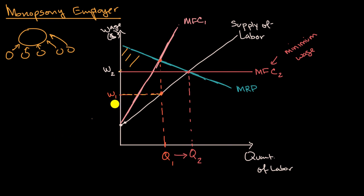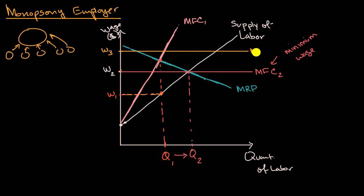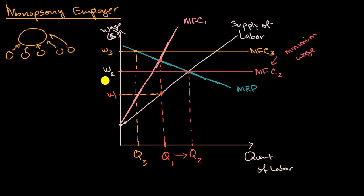The other thing to keep in mind is I picked a very particular wage that would cause this horizontal marginal factor cost curve to intersect the marginal revenue product curve right where the marginal revenue product curve intersects the supply of labor curve. The government could have overshot and set the minimum wage up at W sub three — then the marginal factor cost curve sub three would be higher, and the rational quantity to hire would actually go down, which is more intuitive. But at least theoretically, when you're dealing with a monopsony employer, there could be a situation where forcing wages up could cause the employer to hire more, which is counterintuitive.